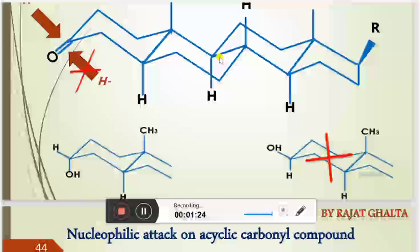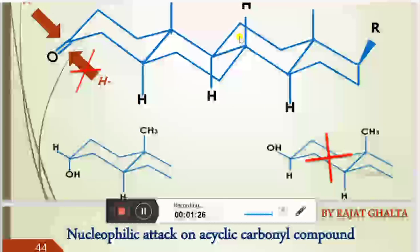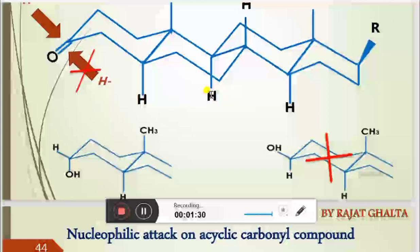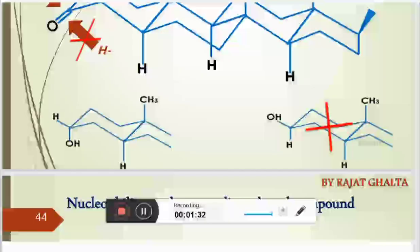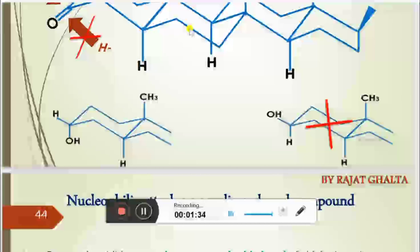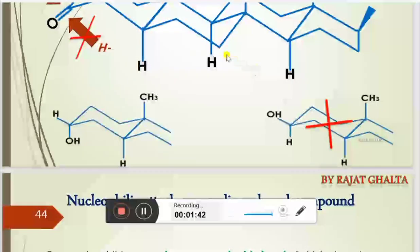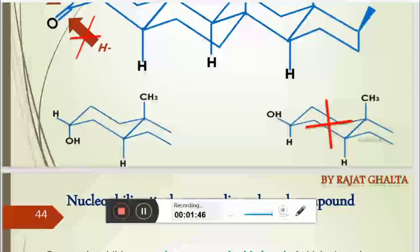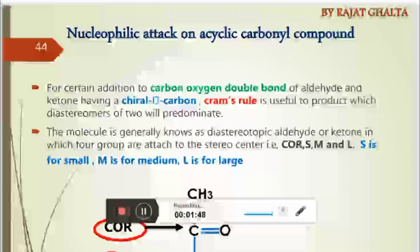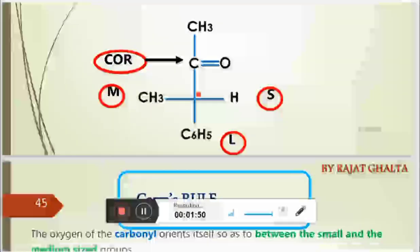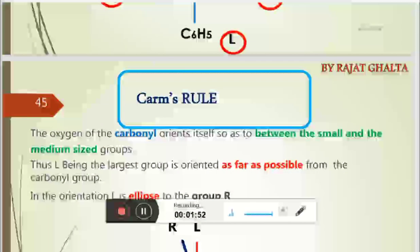First you can make the trans isomer, then you can make the cis isomer. You can see that the two hydrogens are trans to each other. You can also make the cis conformation just by placing it over here. If I make this whole tour by rotating, that will be the cis conformation, but that will be sterically less favorable.